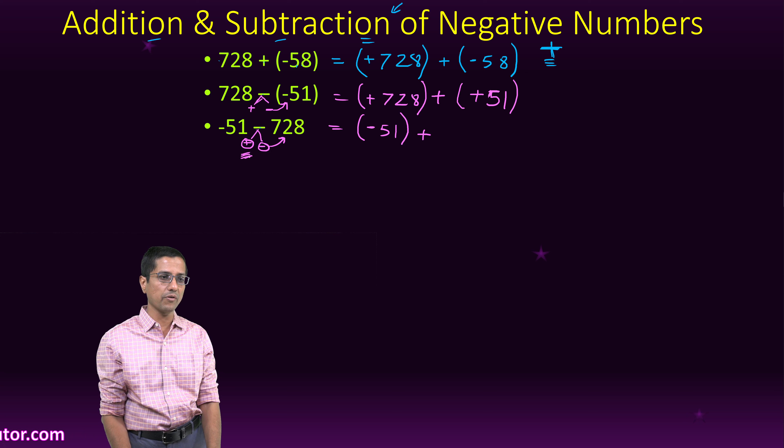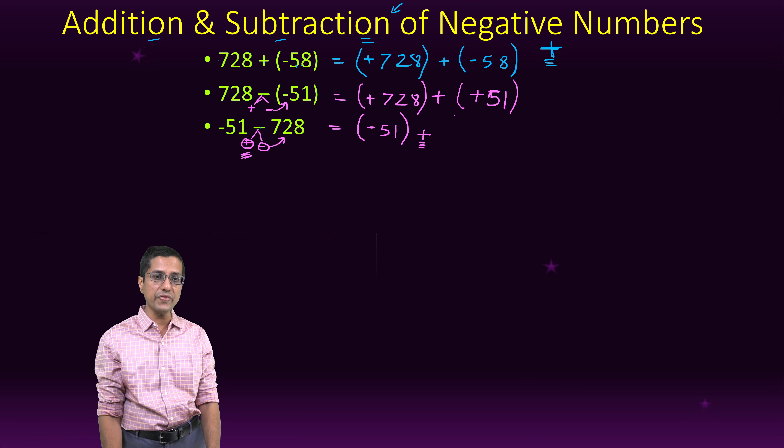This is the plus we are taking from here. This comes here. And then this minus moves with 728. So this becomes minus 728.